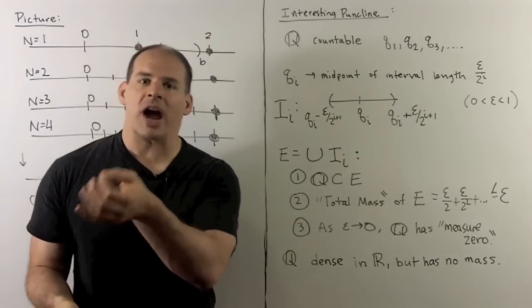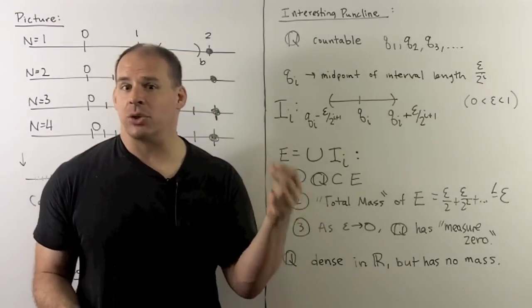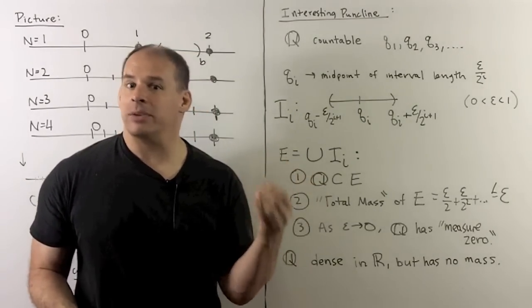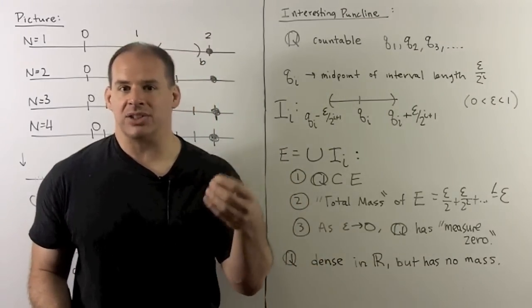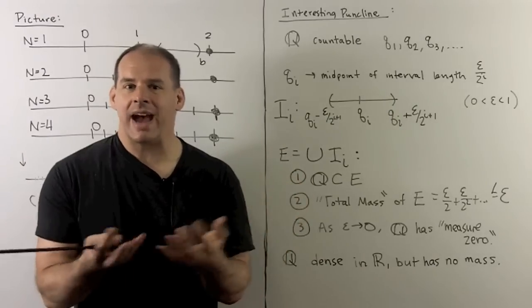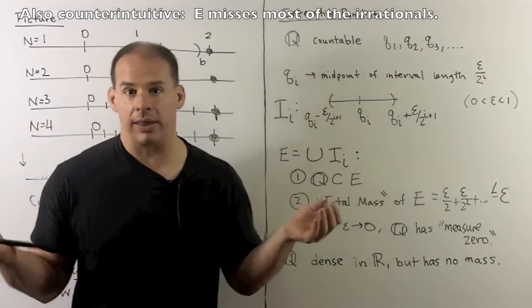So if I drive epsilon down to zero, that means if I wanted to assign a mass to the rationals, that mass would have to be zero. So that would mean the rationals are a dense subset of the reals, but they have no mass. So they're like dust. They're everywhere, but they weigh nothing.